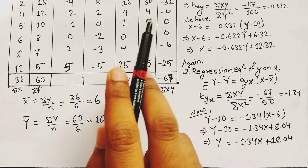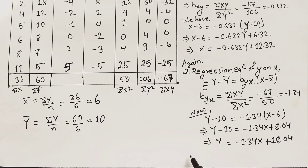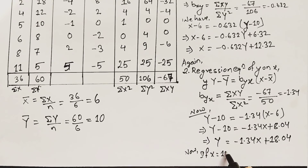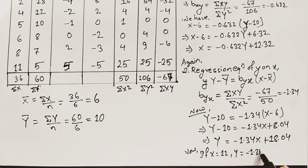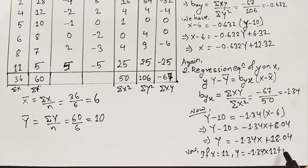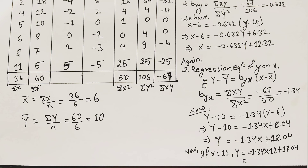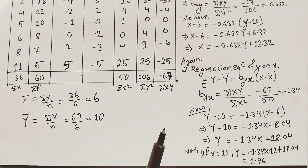We are asked to estimate the value of y when x = 12. Substituting into the regression equation of y on x: y = −1.34(12) + 18.04, giving a final answer of y = 1.96. If you are enjoying the content on Civil Learning Online, please subscribe and share this video with your friends. See you in the next video — stay safe and take care!